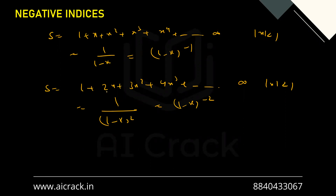So basically what I've done is rewrite these expansion series in terms of a binomial series but with a negative index. A thought might come that this is possible only for a few specific cases. So let's try to derive a generic formula to arrive at these expansion series for these kinds of conditions.